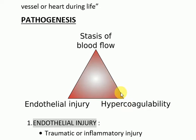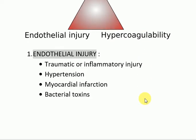Examples of conditions causing hypercoagulability include nephrotic syndrome, pregnancy, obesity, deficiency of antithrombin 3, surgery, cardiac failure, and disseminated cancers. Examples of endothelial injury include traumatic or inflammatory injury, hypertension, myocardial infarction, and bacterial toxins — all of which lead to disruption of the innermost layer of the vessel, the endothelium.